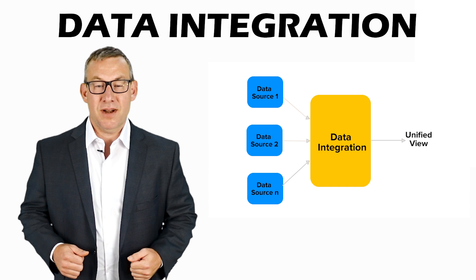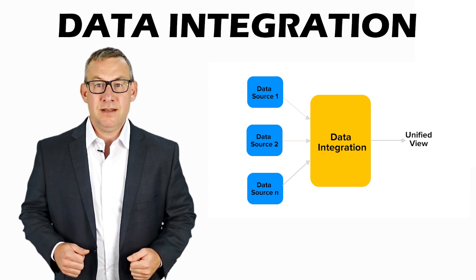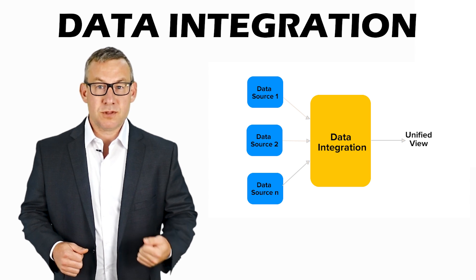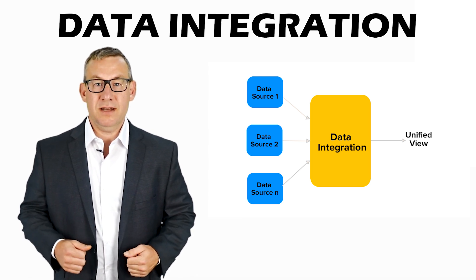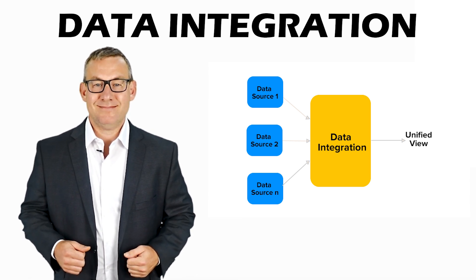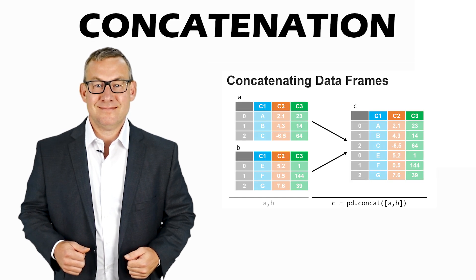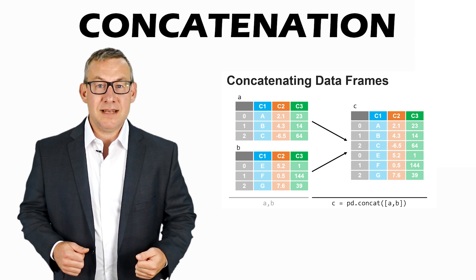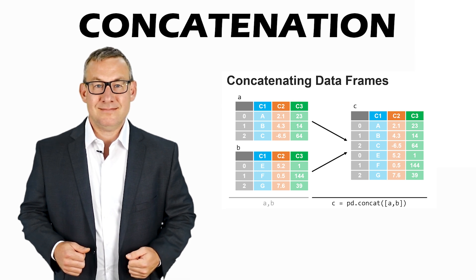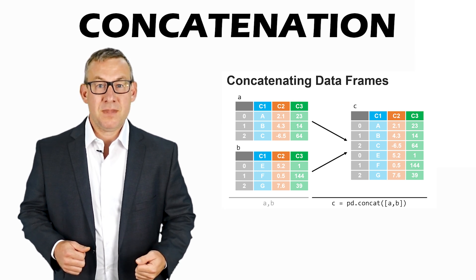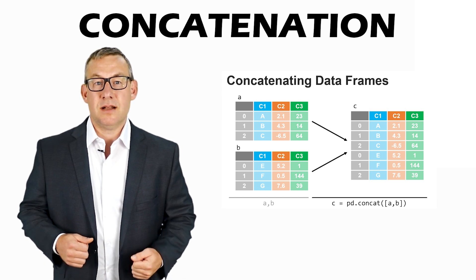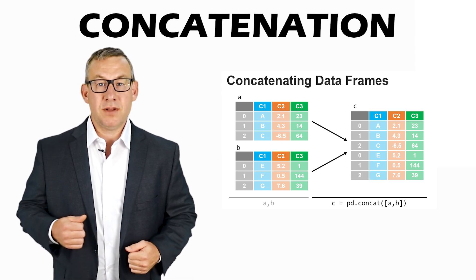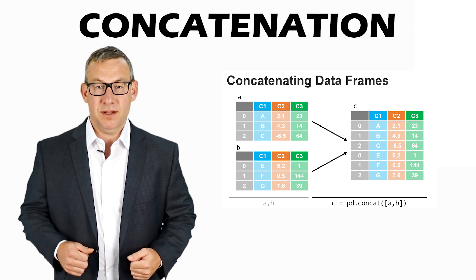Data integration combines data from multiple sources into one unified view. Concatenation is the integration of two or more different data sources such that all the contents of each are accessible in the product.